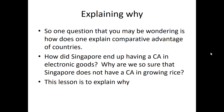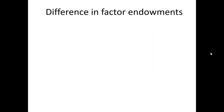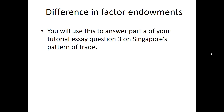One question you might be wondering is: how does one explain comparative advantage of countries? How did Singapore end up having a CA in electronic goods? Why are we so sure that Singapore does not have a CA in growing rice? The objective of this lesson is to explain why, using the concept of difference in factor endowment. You will use this concept to answer part A of your tutorial essay, question 3, on Singapore's pattern of trade.